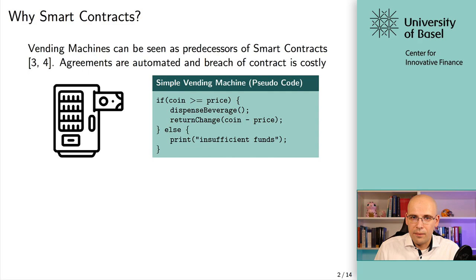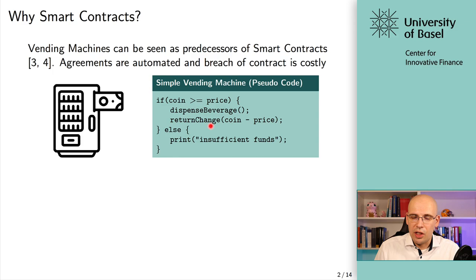The second function that gets called is return_change with the argument coin minus price — that's basically the change you get back in case you paid more than the price. Otherwise, print a message on the vending machine that says 'insufficient funds' — you haven't put enough in, so you don't get your beverage.